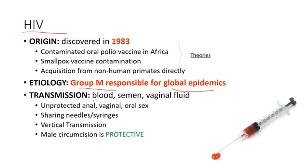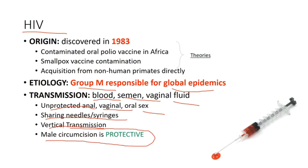For transmission, HIV can be acquired from blood, semen, and vaginal fluid — through unprotected anal, vaginal, or oral sex. You can also get it through sharing needles and syringes, or vertical transmission through the placenta. Male circumcision is protective against this, as it is for many carcinomas such as those involving human papillomavirus.